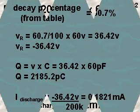V sub R equals 60.7 divided by 100 times 60 volts, or 36.42 volts. V sub R is therefore minus 36.42 volts. Q equals 60.4 volts, or 2185.2 picocoulombs.